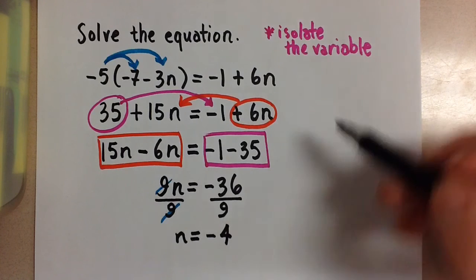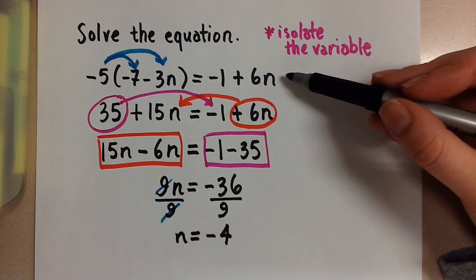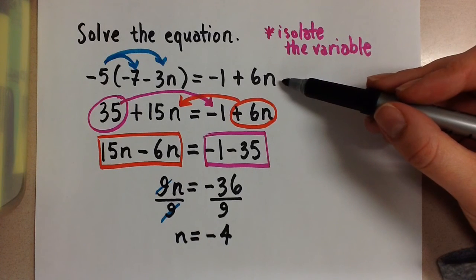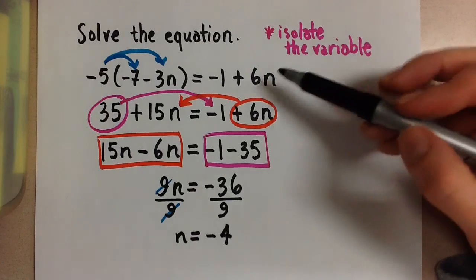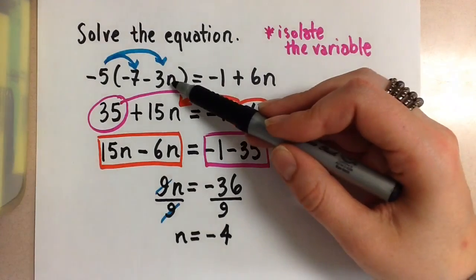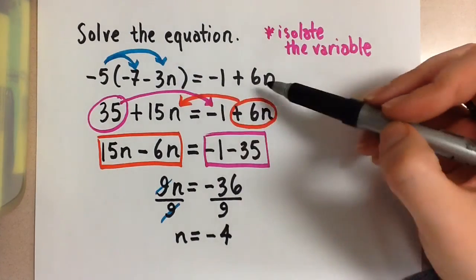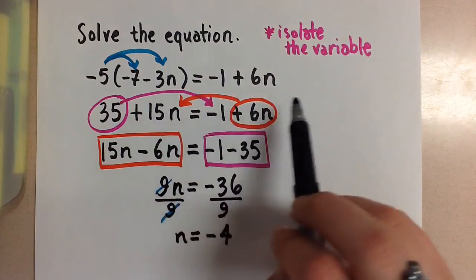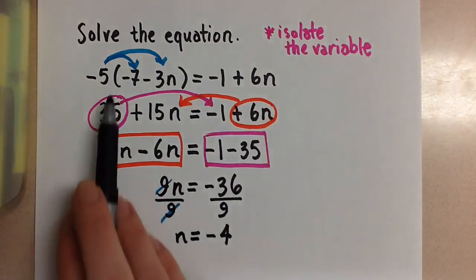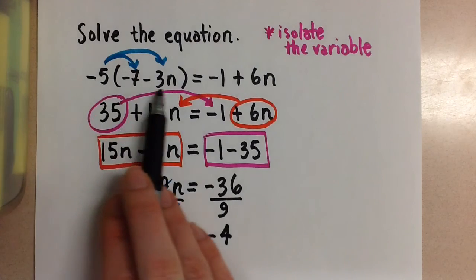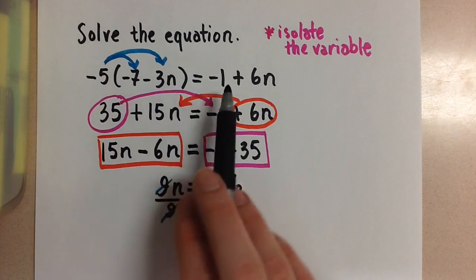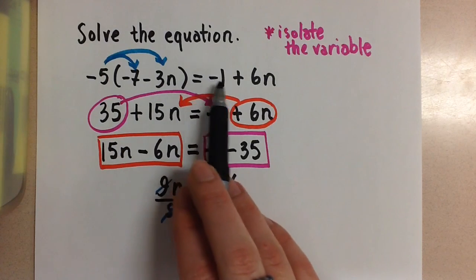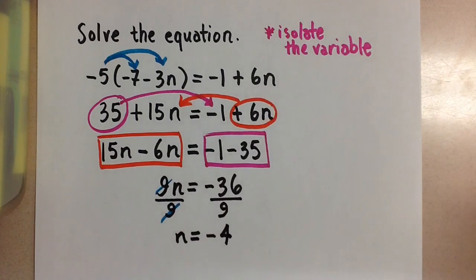This means if I go back to the original equation and substitute in negative 4 wherever I see n, I should get a balanced equation — meaning the same number on the left hand side as the right hand side.